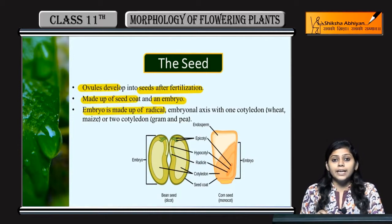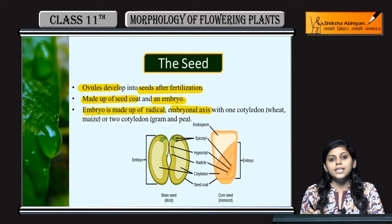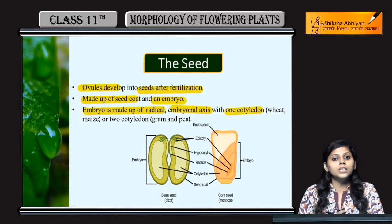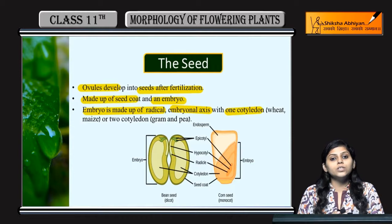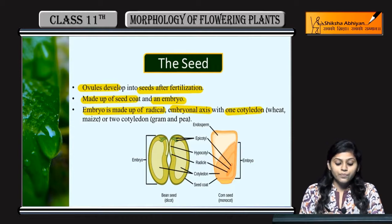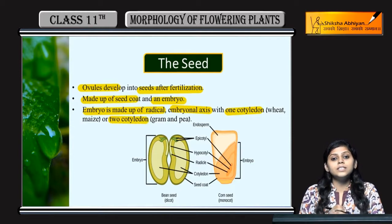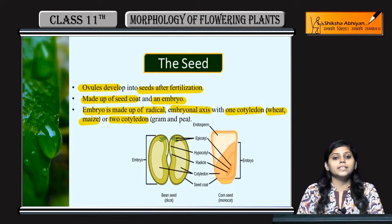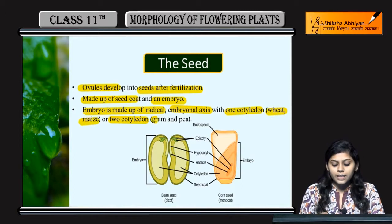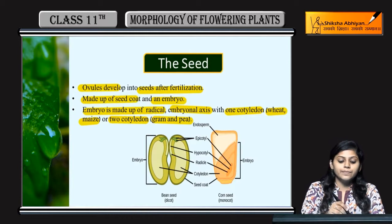Embryo is made up of radicle, embryonal axis, and cotyledons. Agar ek cotyledon ho to use monocotyledon bolenge; 2 cotyledons ho to dicotyledon bolenge. Monocotyledonous plants include wheat and maize, while dicotyledonous plants include gram and pea.